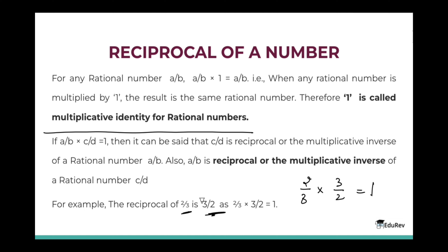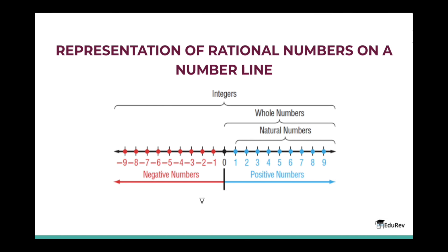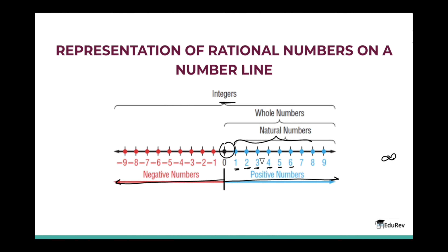Now let's move to the fun part: representation of rational numbers on a number line. Before going straight to rational numbers, let's look at the representation of natural numbers, whole numbers, and integers on the number line. Natural numbers start from 1 and go up to infinity. Whole numbers are natural numbers with 0 added. Integers include positive numbers, negative numbers, and 0. This is the general representation of integers, whole numbers, and natural numbers on a number line.